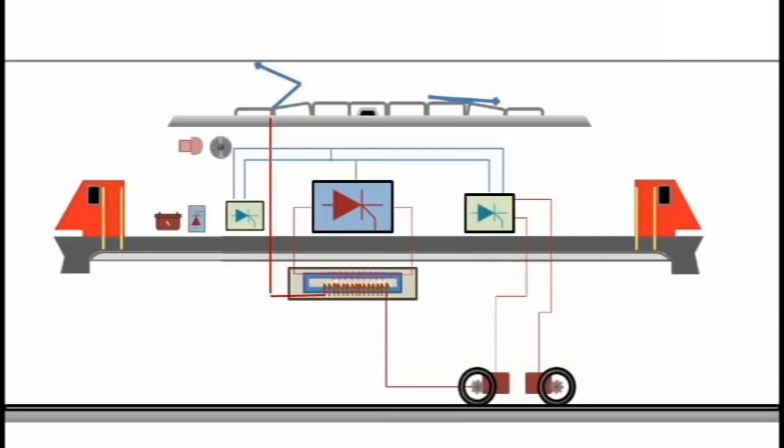Transformers and rectifiers produce a lot of heat and have to be kept cool. This important job is done by cooling fans which are powered by the auxiliary inverters and rectifiers.